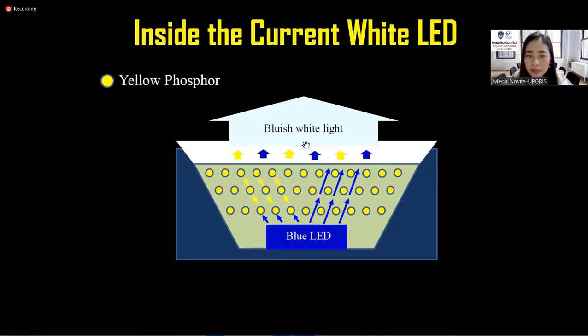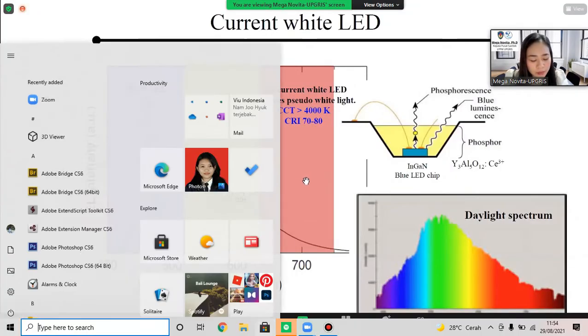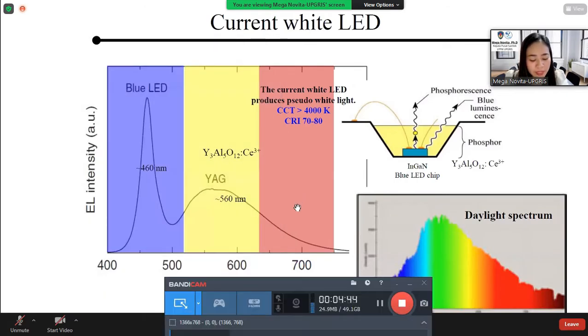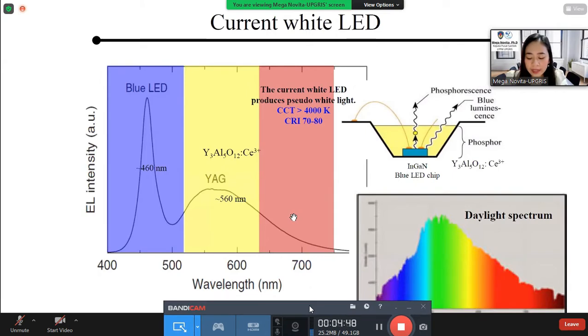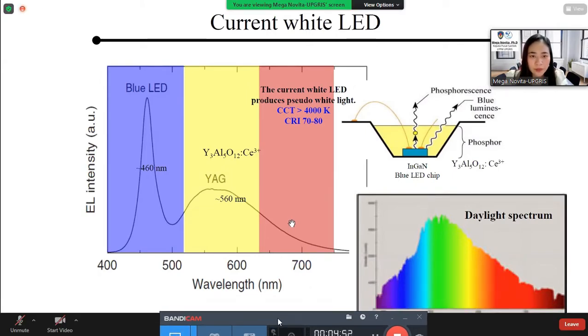However, the color is a little bit bluish. It is because it lacks a red component. And compared to daylight spectra originating from sunlight, the current white LED lacks red component. That is why we see the bluish white light. So, why do we need red components?